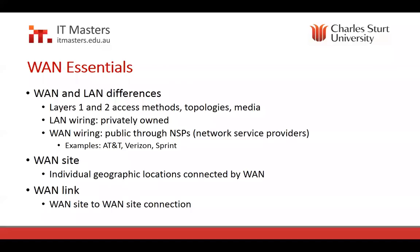LAN — local area network — wiring is generally privately owned. It's something you get installed within your enterprise location and are responsible for maintaining. Whereas in the WAN, the wiring and the underlying carriage architecture is generally provided through a network service provider, or in Australia, an ISP. Examples include AT&T, Verizon, and Sprint in the US; over here we would have Optus, Telstra, smaller providers like Community Telco Australia, and AAPT. Which one you go to depends on their connection in your particular area and obviously price.